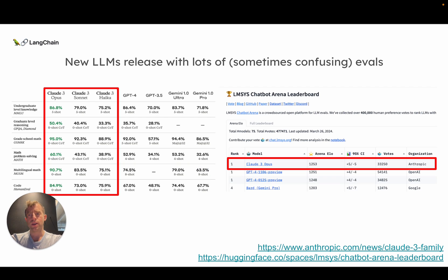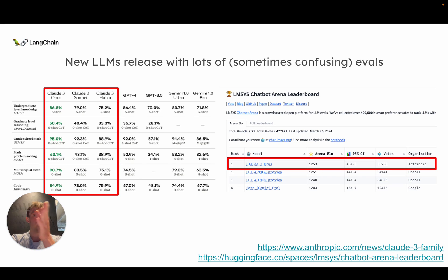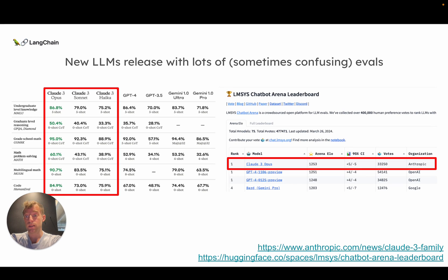To set the stage: when new models release, like Claude 3, you often see a bunch of public evaluations reported. On the left here is the Claude 3 blog post showing a bunch of different evals in the various rows, compared to other popular LLMs in the various columns. You've also seen things like Chatbot Arena, which now has Claude 3 Opus at the top. But the question is: what are these evaluations, how do you think about them, and how could you implement them yourself?